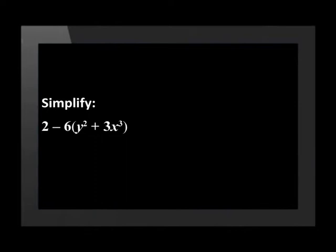There are no like terms, so let's apply Distributive Law. Distributing the negative 6, we get an answer of 2 minus 6y squared minus 18x cubed. The 2 does not multiply into the brackets because it is a separate term to them. Let's look at two more examples.